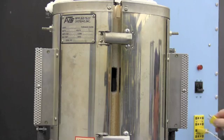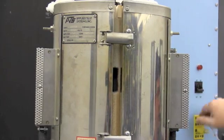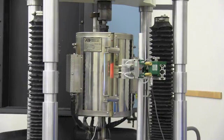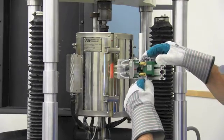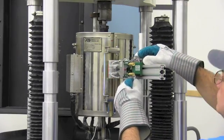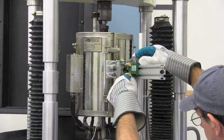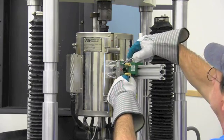The specimen is held at temperature for a minimum of 30 minutes before applying load. A slight preload is applied and the technician then mounts the extensometer onto the rail and slides it into place so the high temperature ceramic rods contact the specimen.